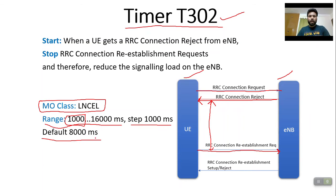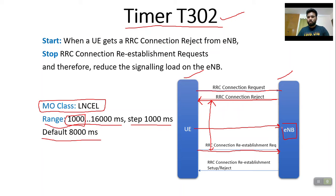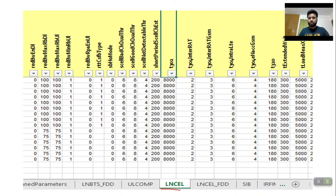The default value for timer T302 is 8000ms, and both internal and user values are 8000ms. If you use 1000ms, the UE will retry after only 1 second. But the eNodeB may have rejected due to overload or high utilization, so retrying too quickly risks rejection again. Waiting longer — like 8000ms — increases the success rate and reduces signaling load on the eNodeB. The dump confirms T302 is under the LN cell MO class with a value of 8000ms.